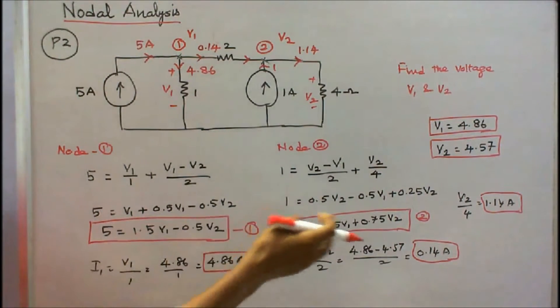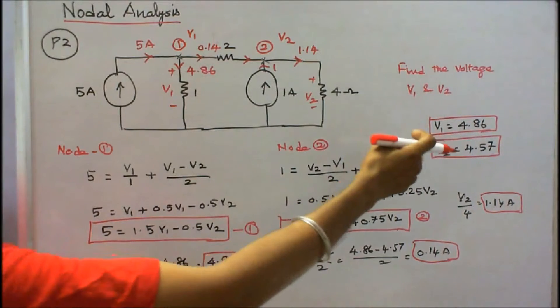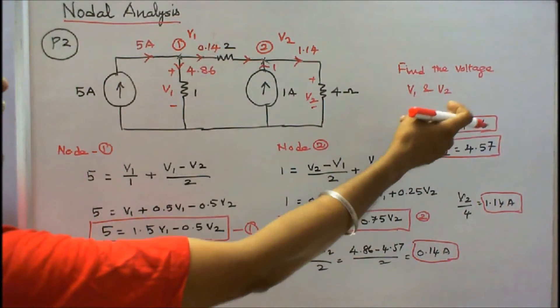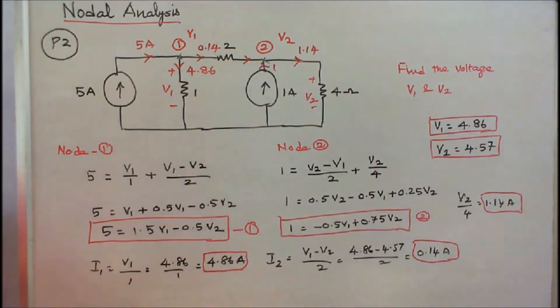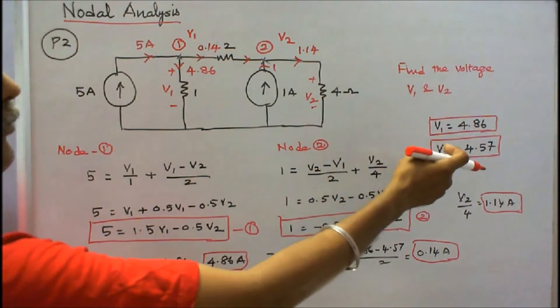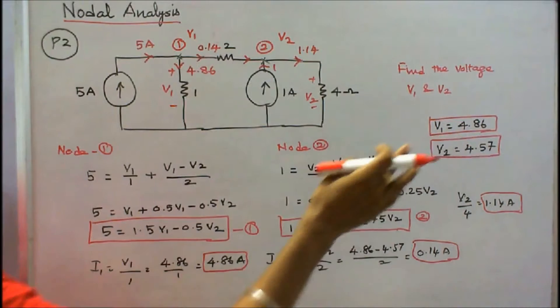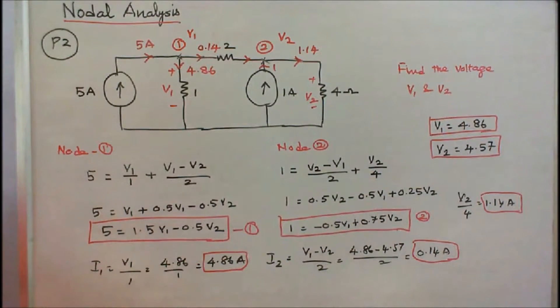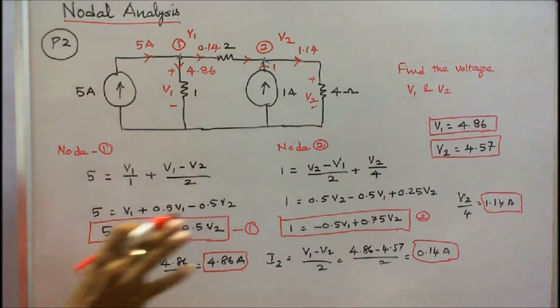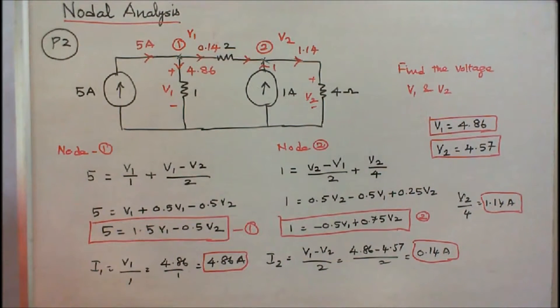Solving the two equations gives V1 equal to 4.86 volts and V2 equal to 4.57 volts. That's the answer.